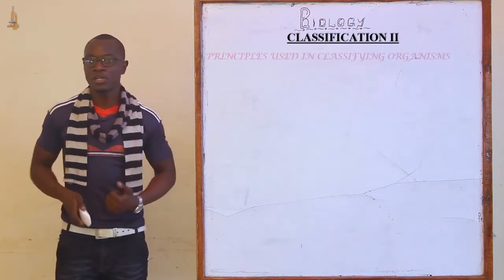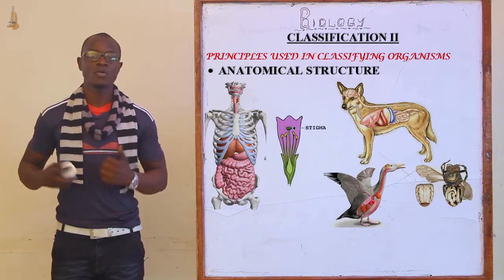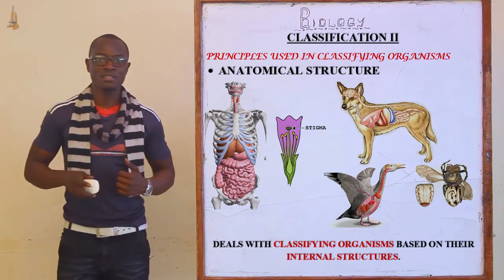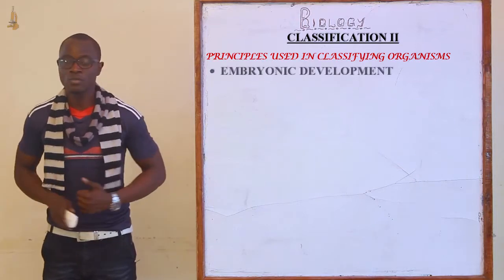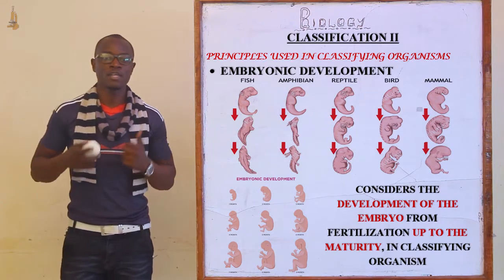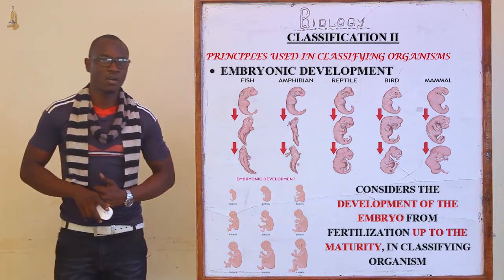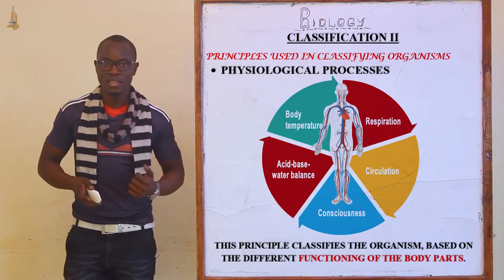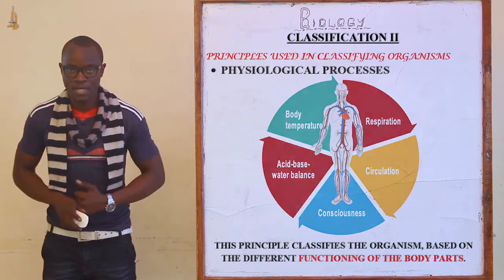What are the principles used in classifying organisms? The first principle is anatomical structure, which mainly considers the internal structures of different organisms. The next one is embryonic development, which considers the development of the embryo from fertilization up to later stages. Then we have physiological processes, which mainly considers the different functions of the different body parts of the organism.